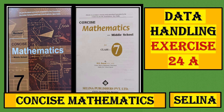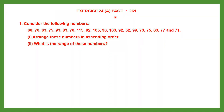Hello students, let's do data handling exercise 24a, page number 261, question 1. Consider the following numbers. Some numbers are given to us here and they have been randomly arranged — they are not in any particular order. When numbers are collected like this, this is called raw data.